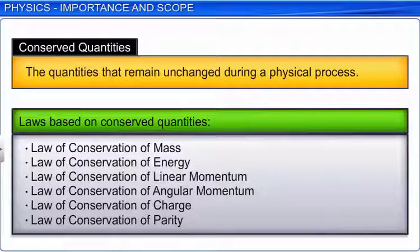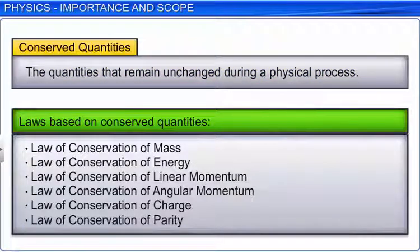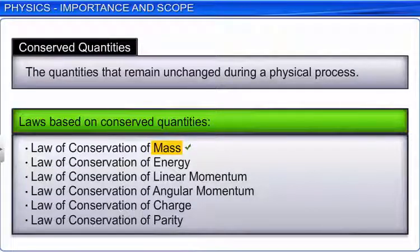Most of these laws are based on some special quantities that remain unchanged in a process, which are known as conserved quantities. Some of the general conservation laws in nature include the laws of conservation of mass, energy, linear momentum, angular momentum, charge, parity etc.